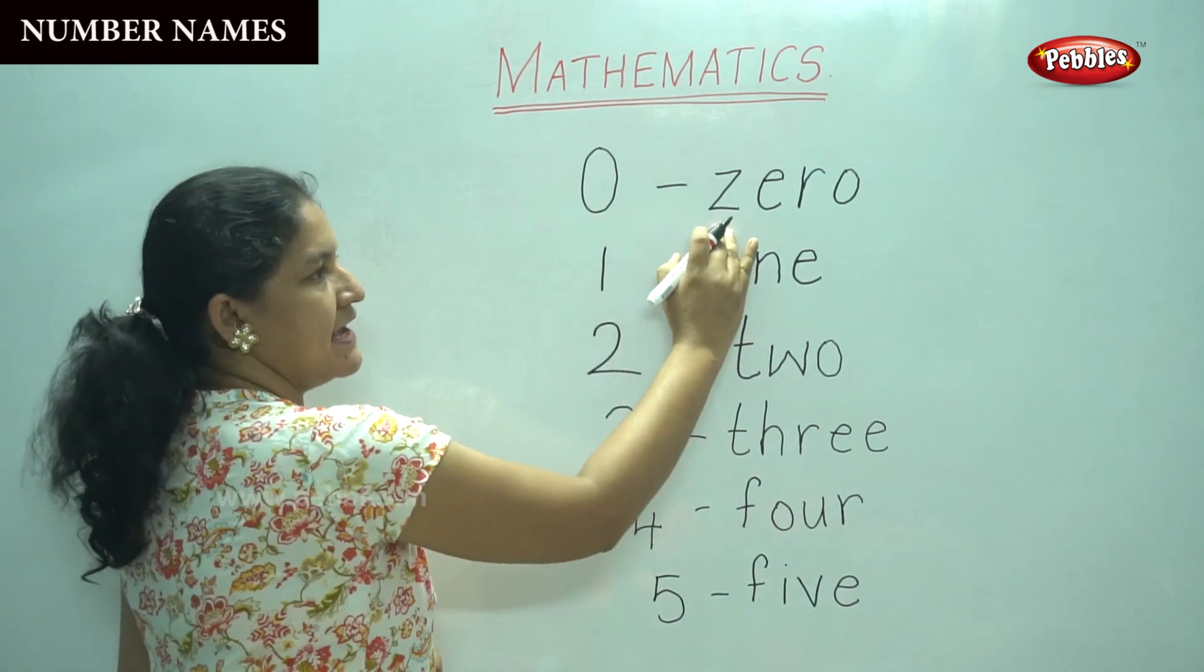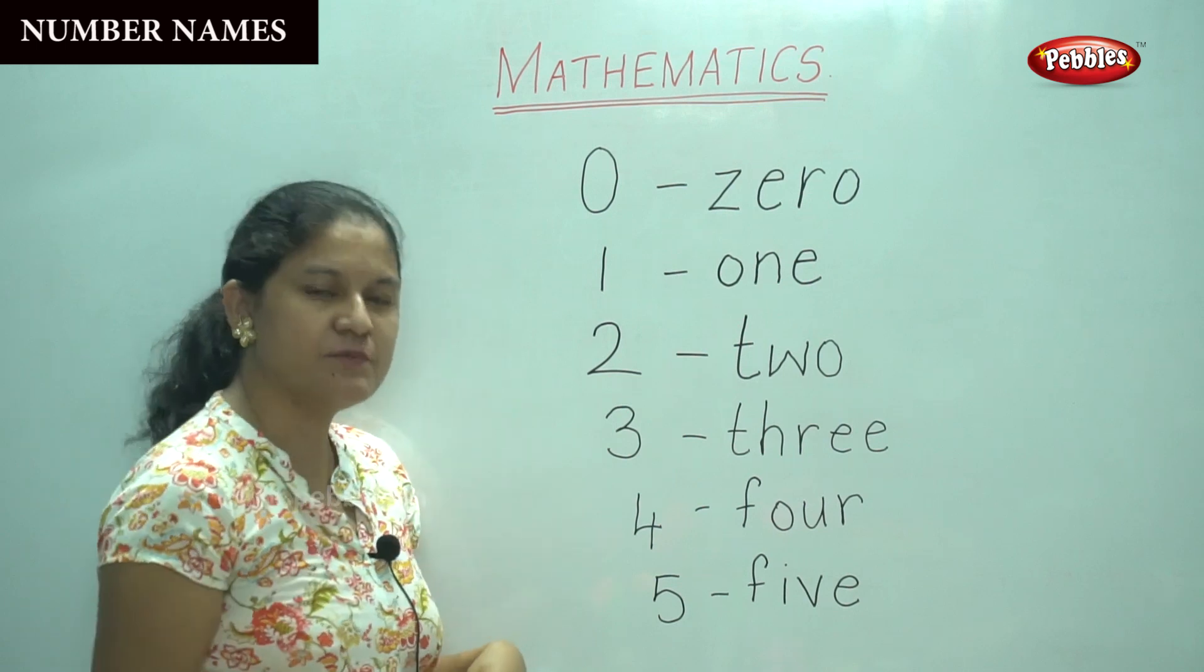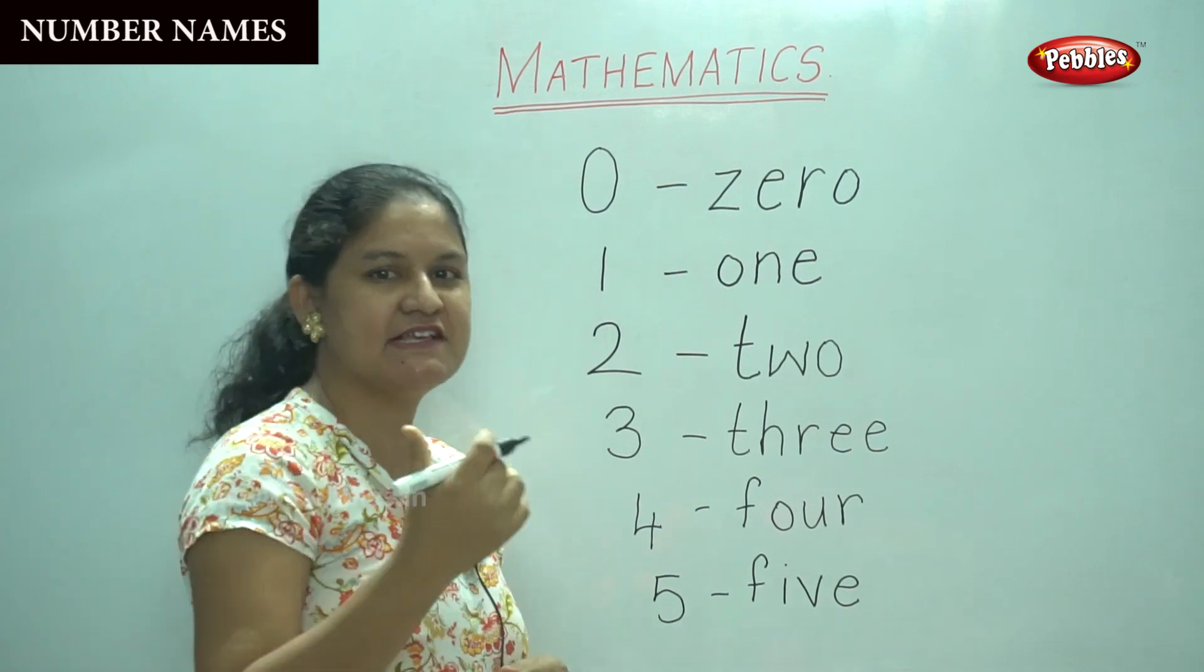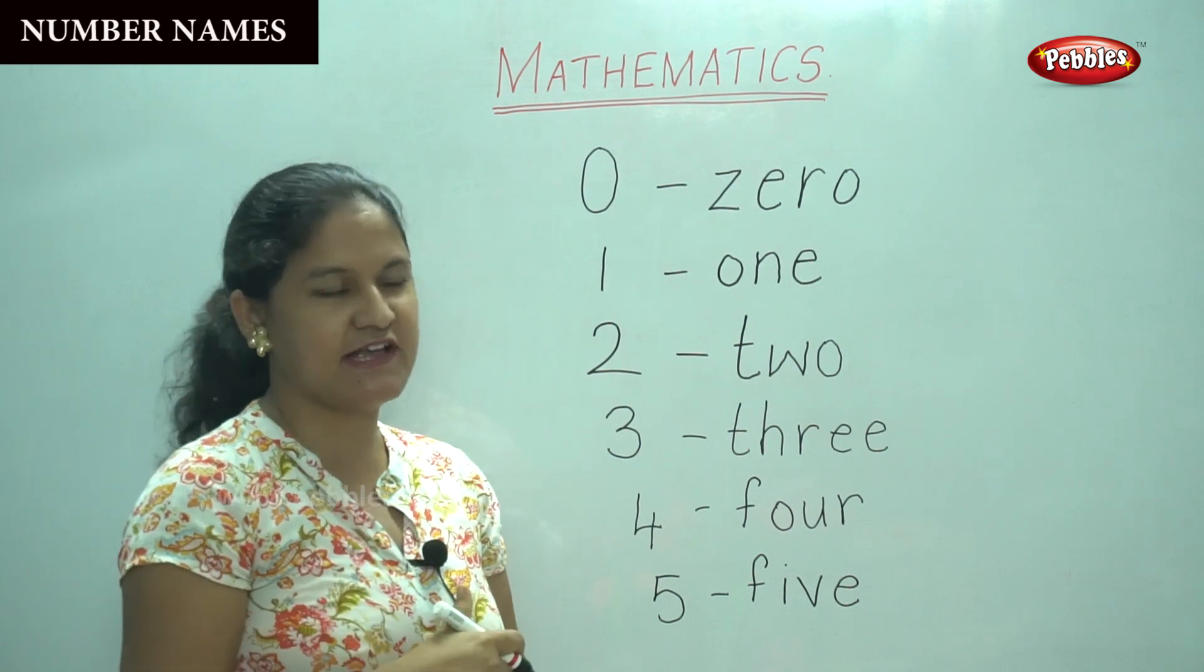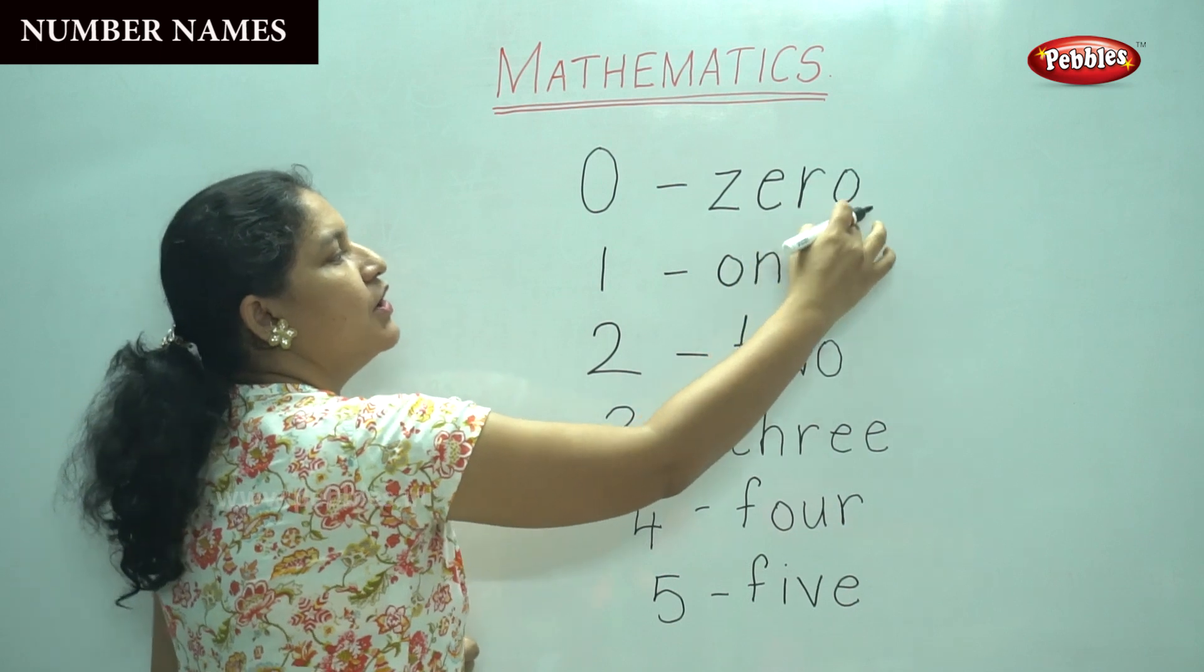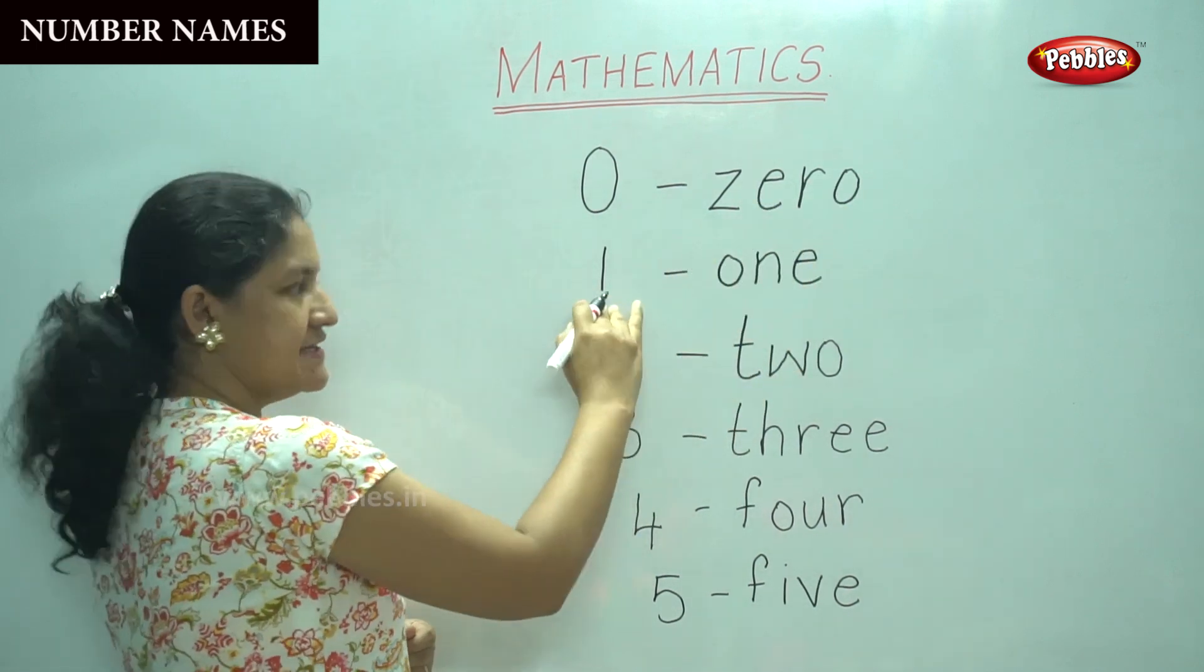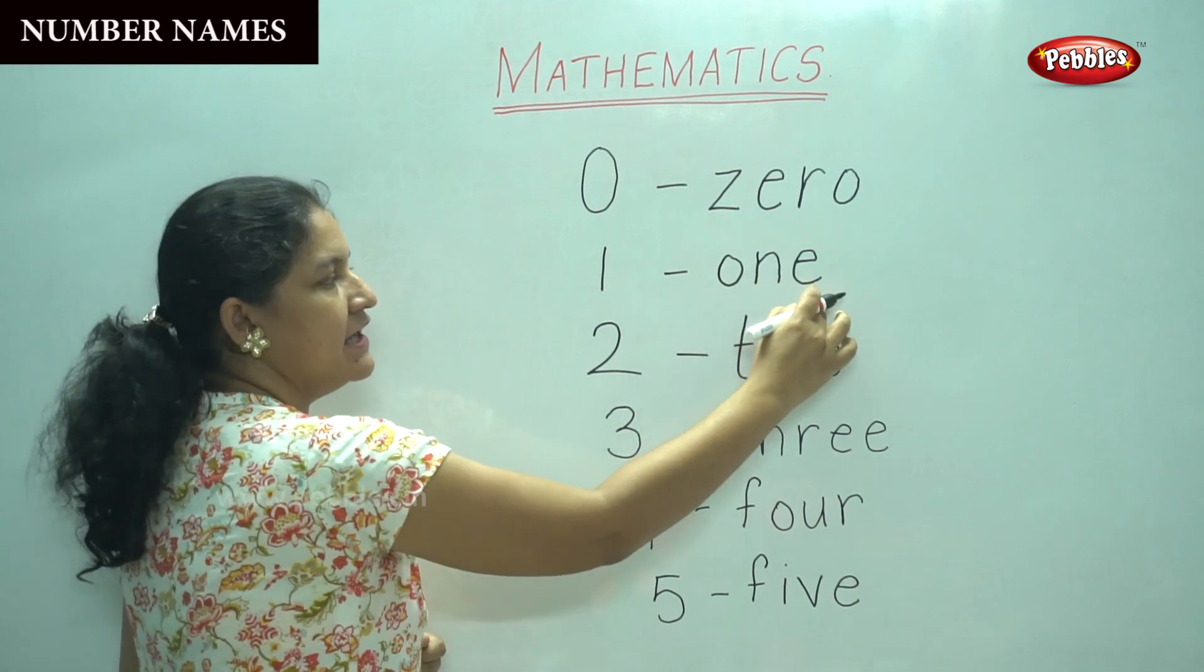0: Z-E-R-O, 0. So if you repeat it with me children, it will be easy for you to register it in your mind. So shall we say 0 again? Z-E-R-O, 0. The next number is 1: O-N-E, 1.